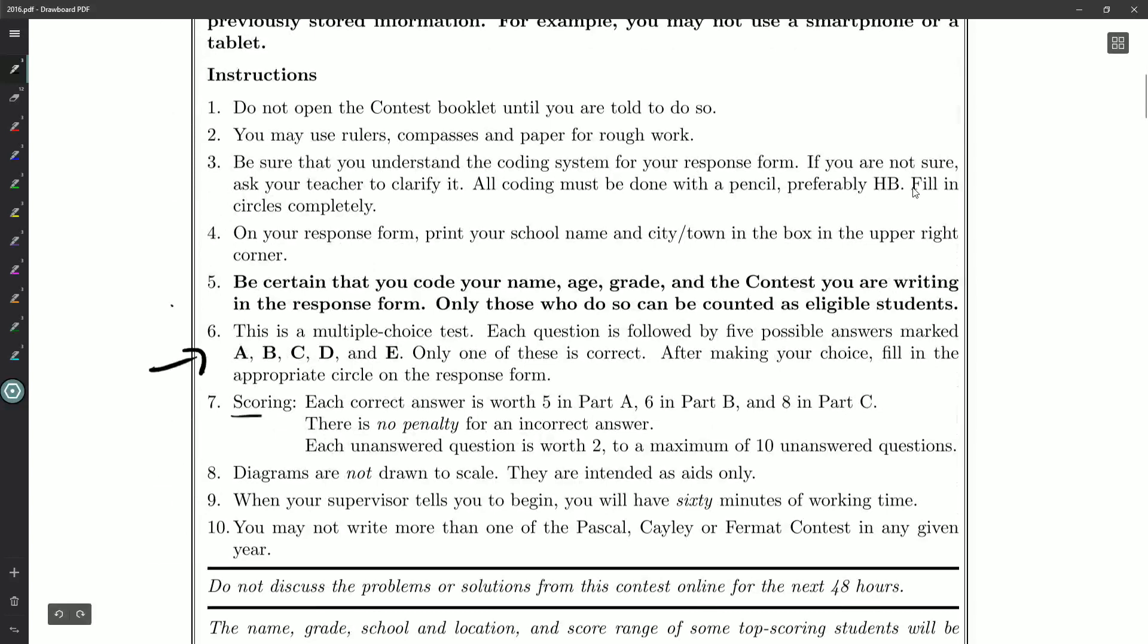One thing to be aware of is the scoring, because you want to do the best you can and that sometimes means making hard choices about time management. You might give up one of the eight-mark Part C questions to have a better chance of answering two of the six-mark Part B questions.